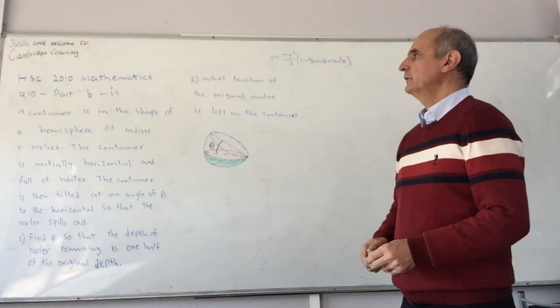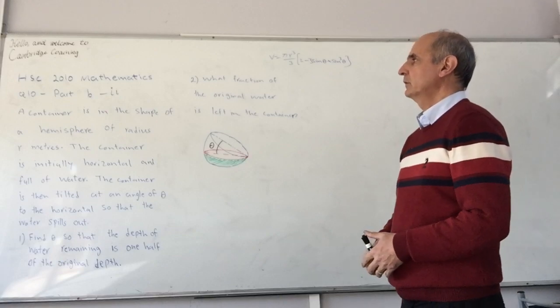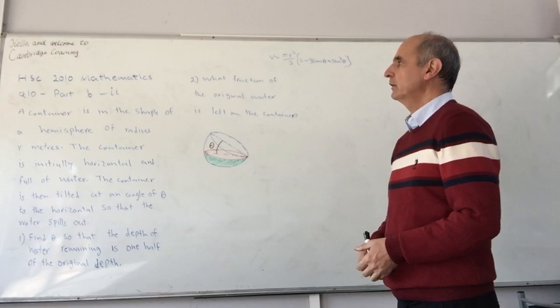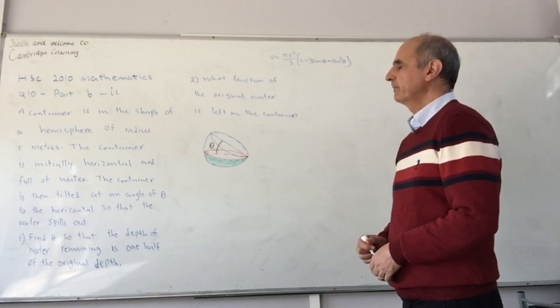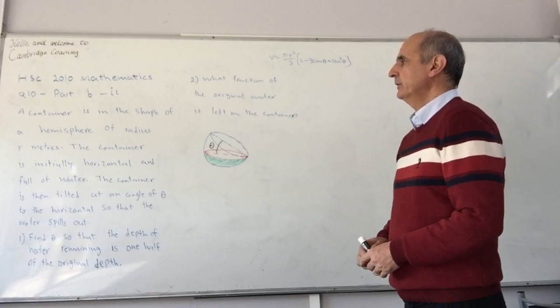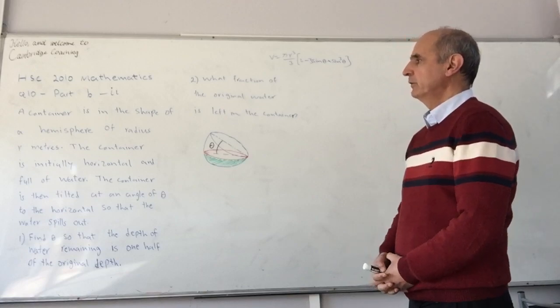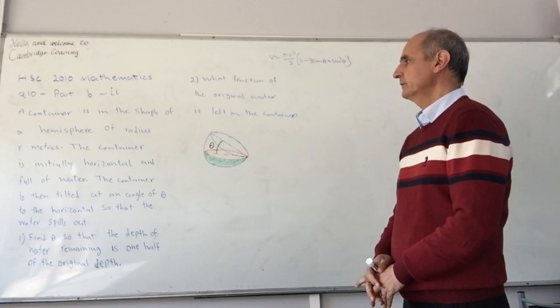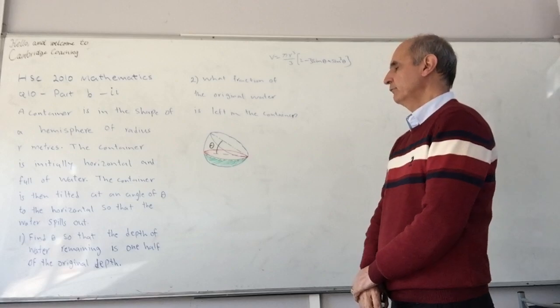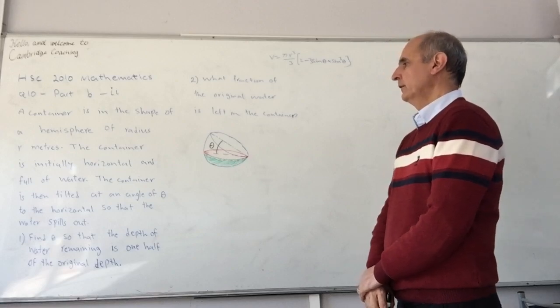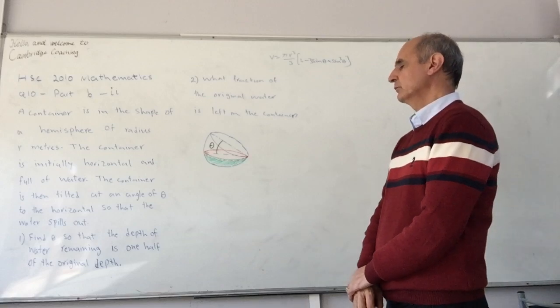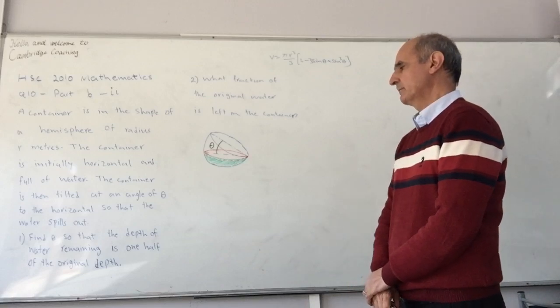Now we continue with HSE 2010 Mathematics question 10 part BII. A container is in the shape of a hemisphere of radius r meters. The container is initially horizontal and full of water. The container is then tilted at an angle of theta to the horizontal so that the water spills out.